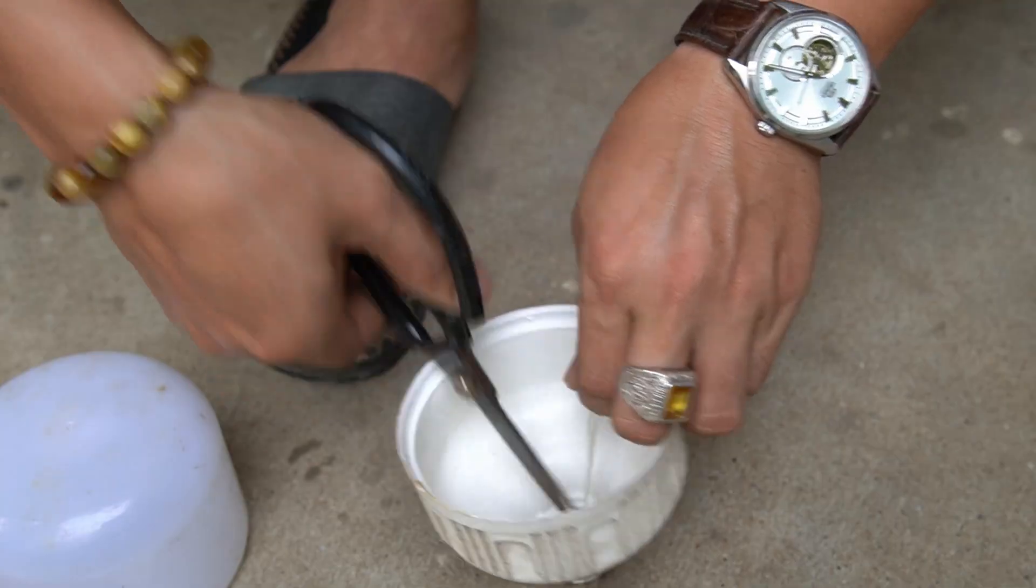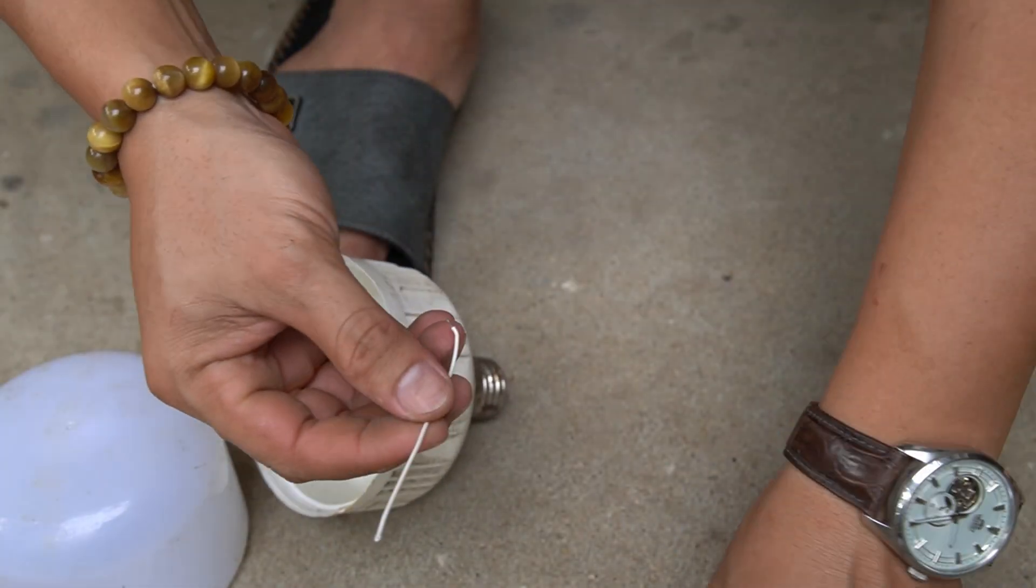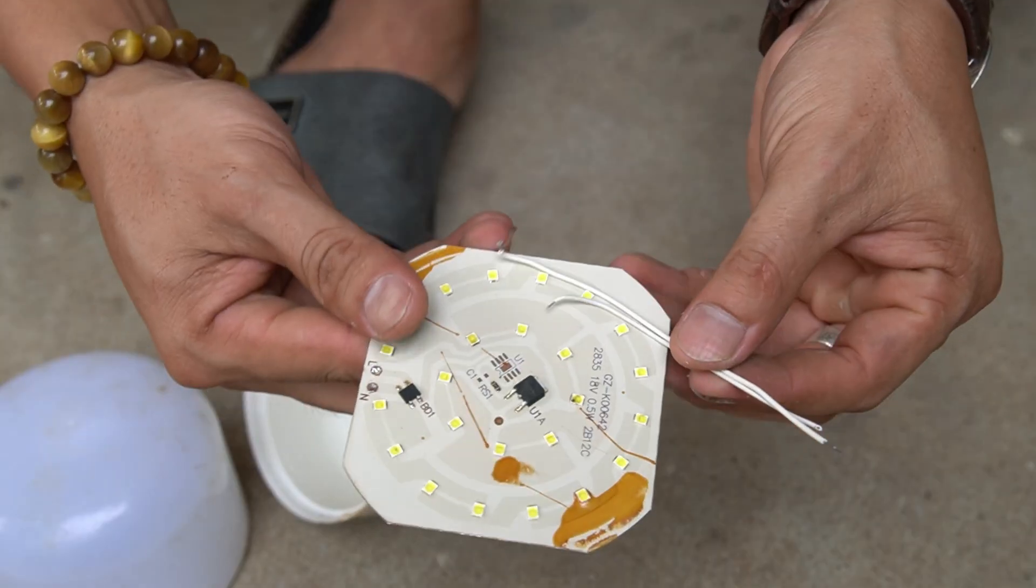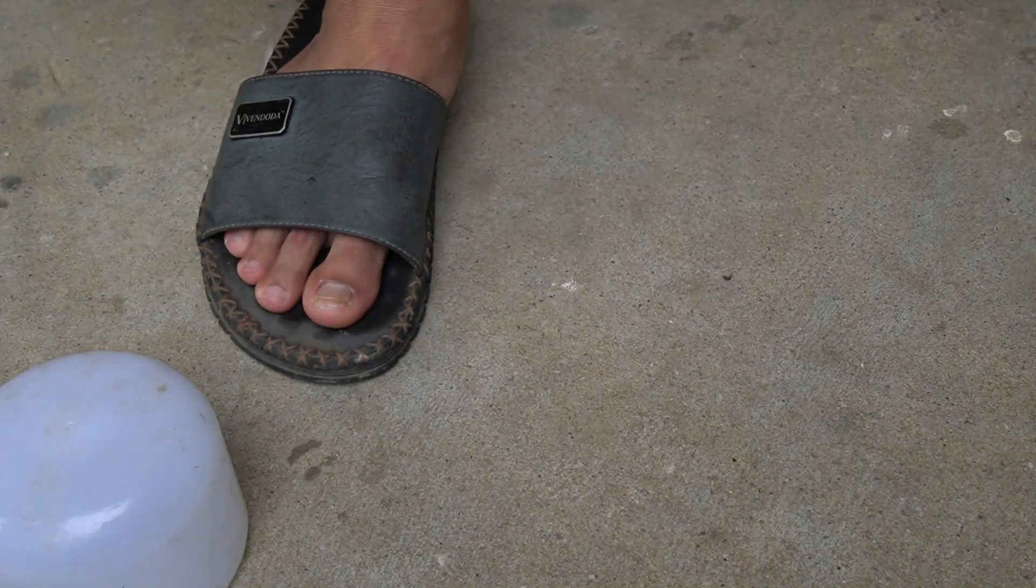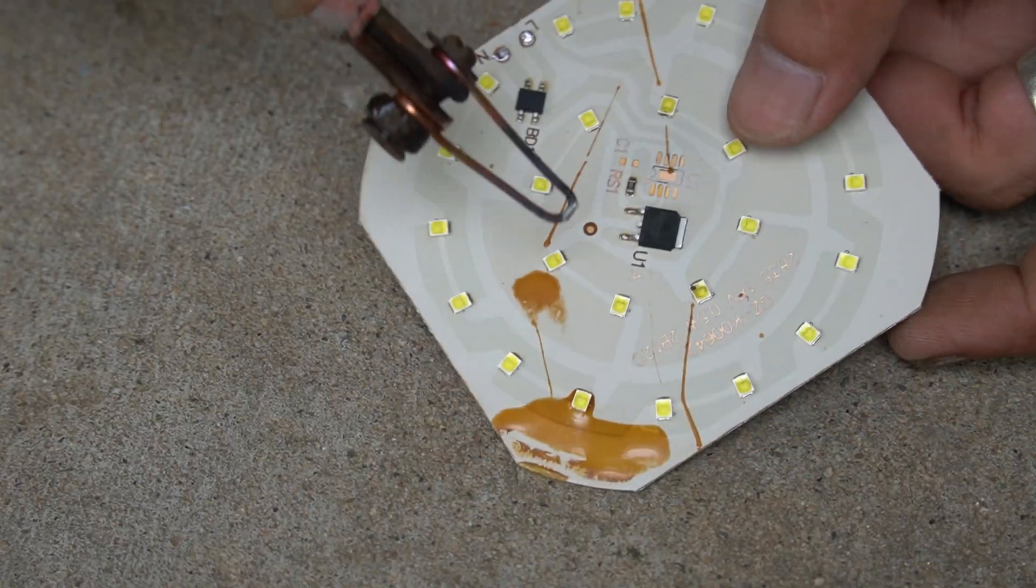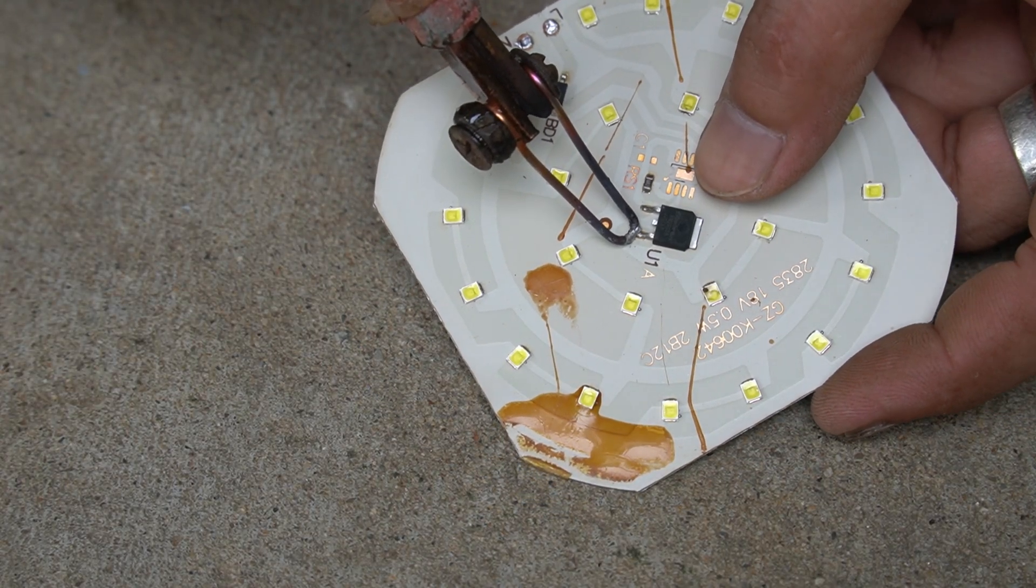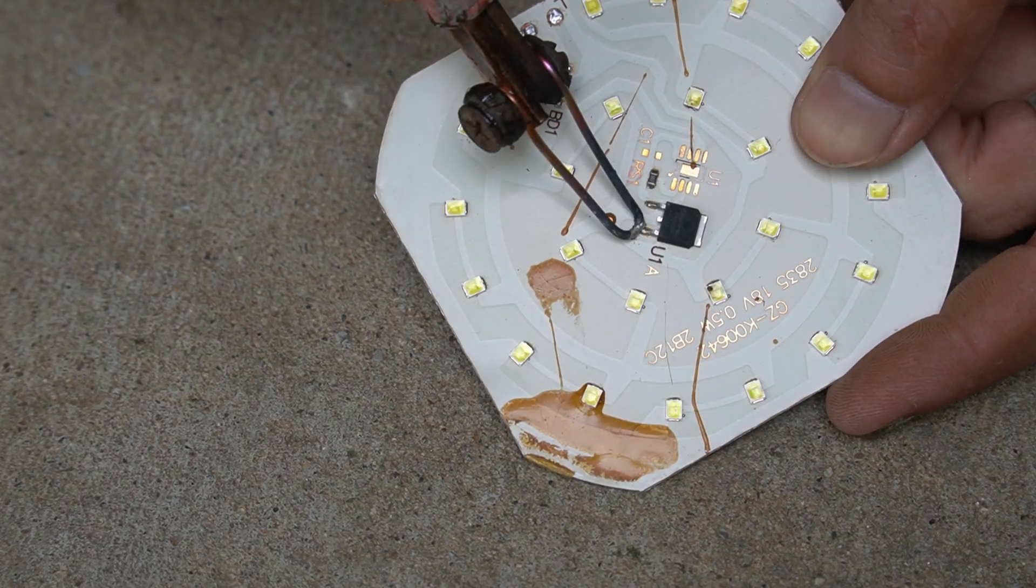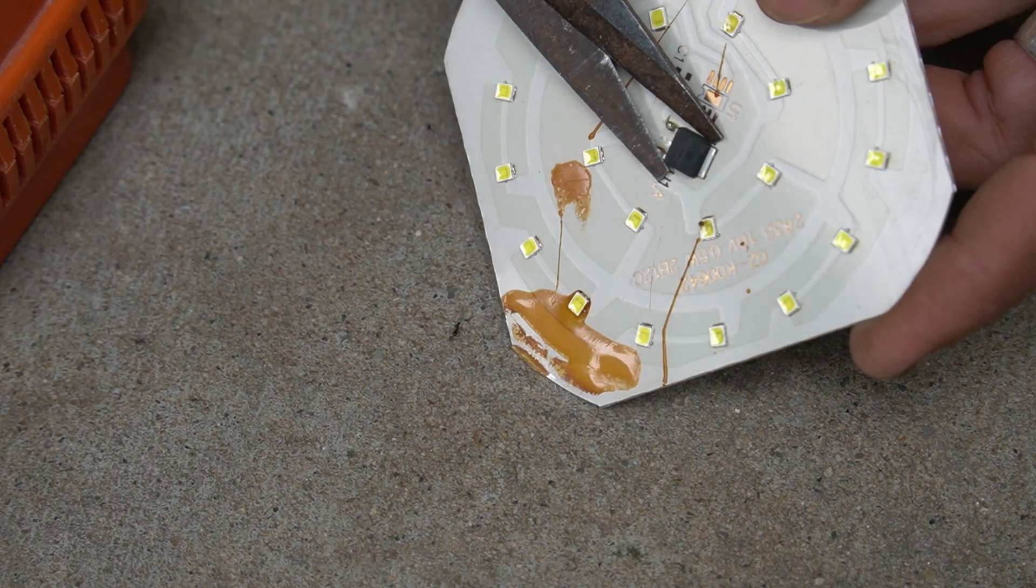Maybe it is easier to use scissors to cut. Next I will remove the broken capacitor on the LED bar. I used a soldering iron to easily get it out.